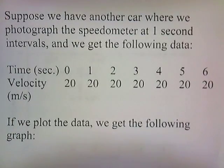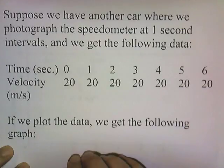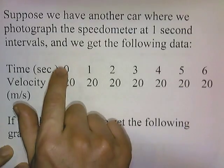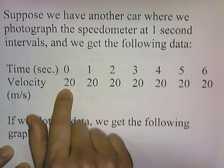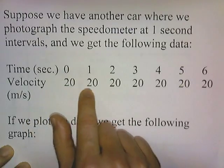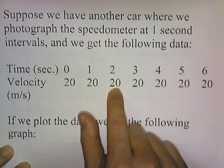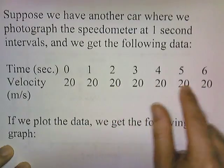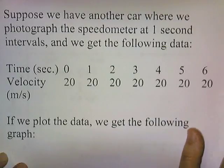Now suppose we have another car where we photograph the speedometer at one-second intervals and get the following data. This car is already in motion. When we start the stopwatch and take a picture of the speedometer, it says 20 meters per second. One second later, the velocity is 20 meters per second, and two seconds later it's still at 20 meters per second, and so on. If we plot this data, we get the following graph.